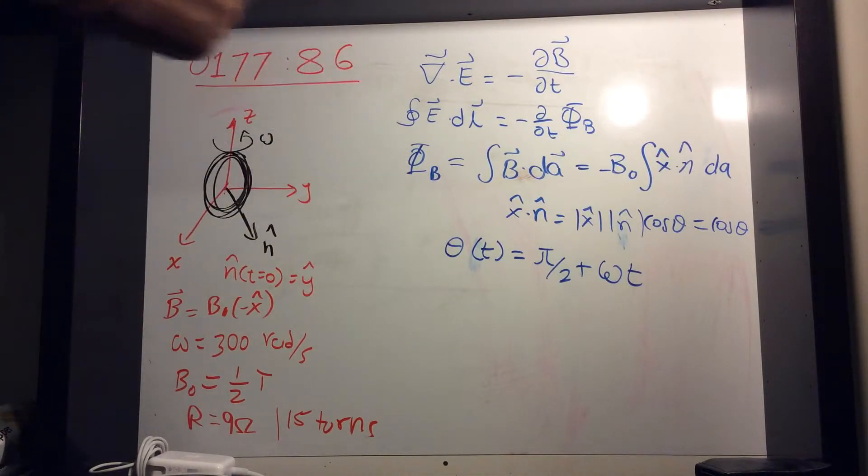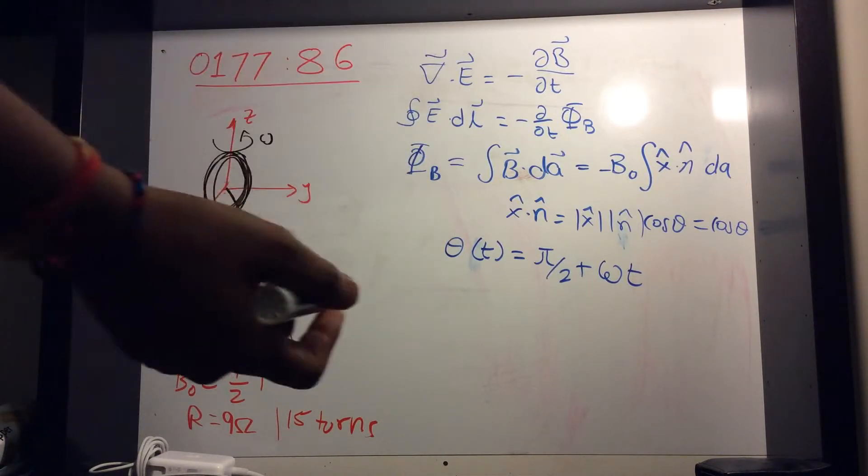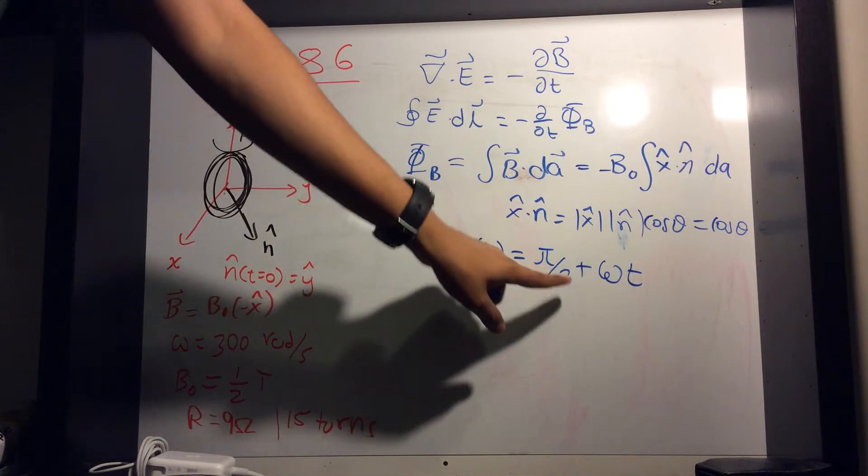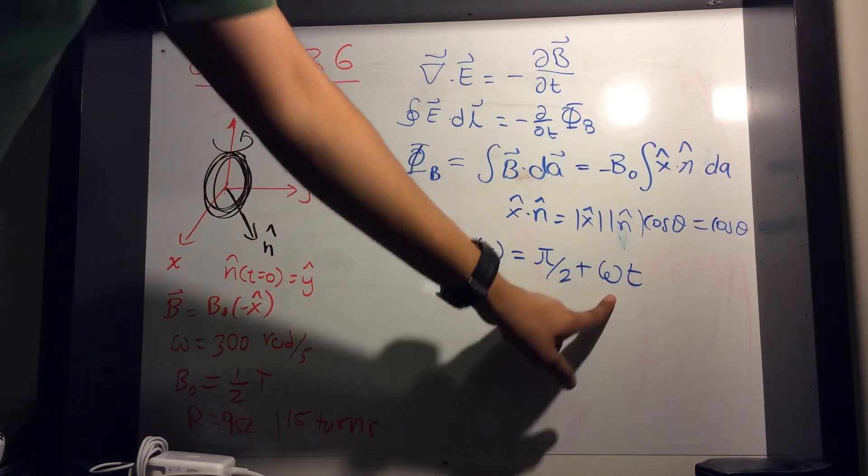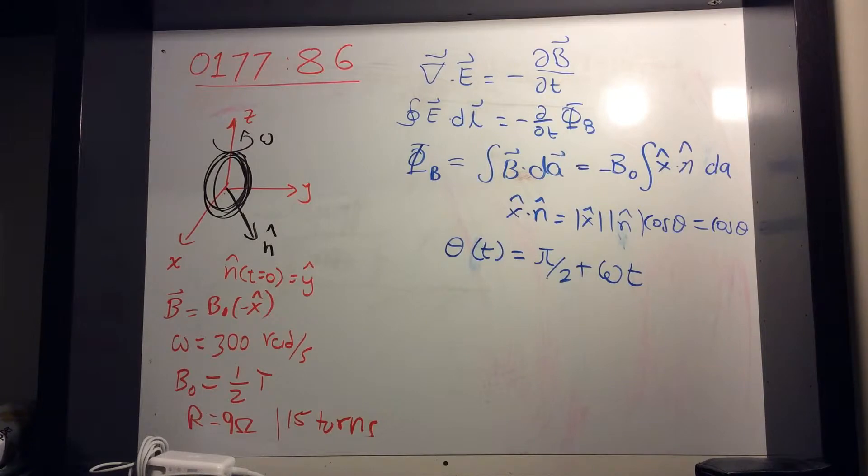So your angle increases with the velocity times time. Just like your position, x is x naught plus vt. x of t is equal to x naught plus velocity in x times time. So it's a similar situation here.